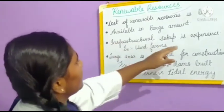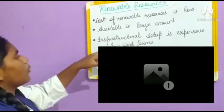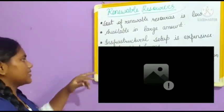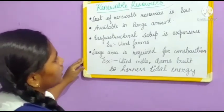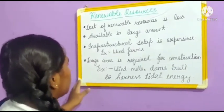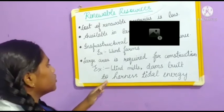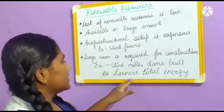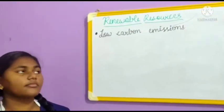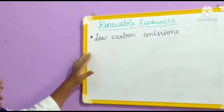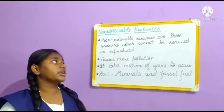The infrastructure setup for renewable resources is expensive — for example, wind farms. Large areas are required for construction. They are also a less dense source of energy. They have low carbon emissions.